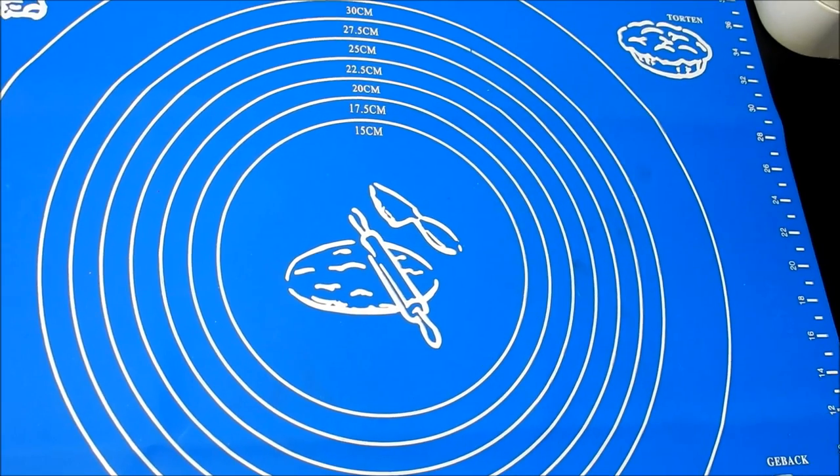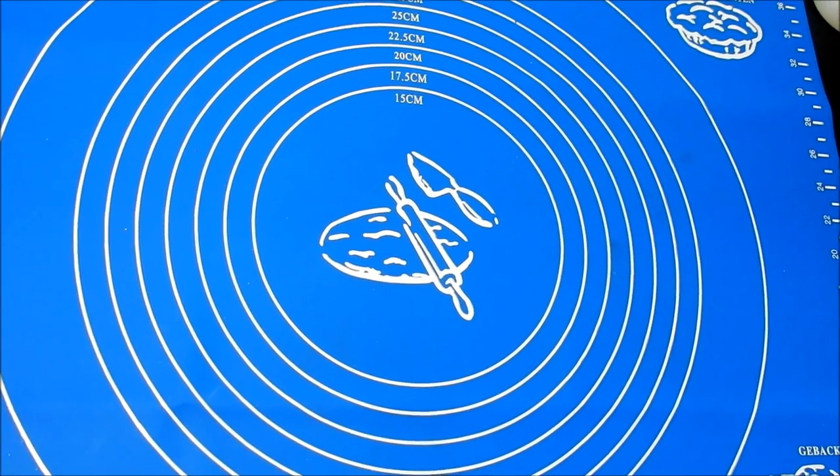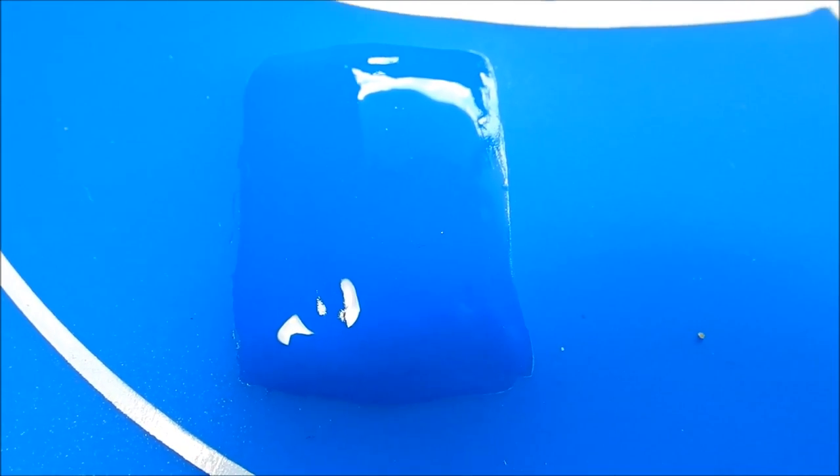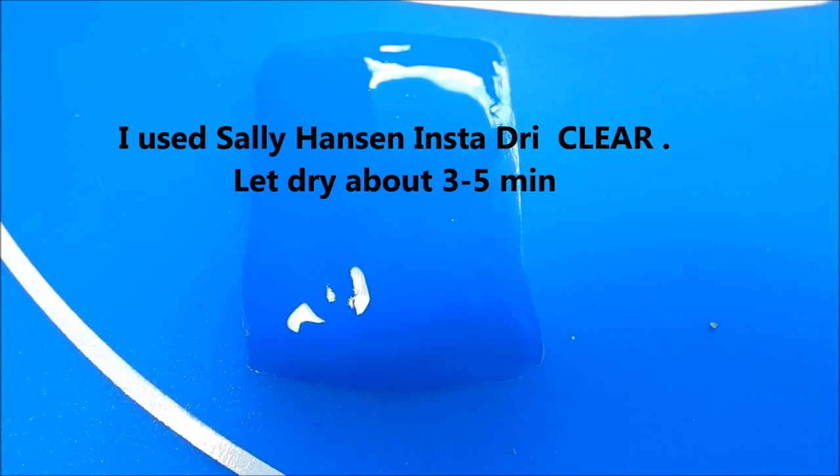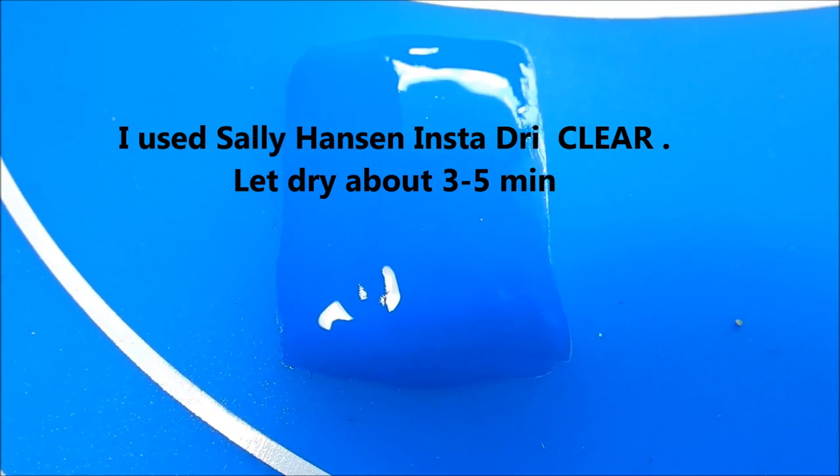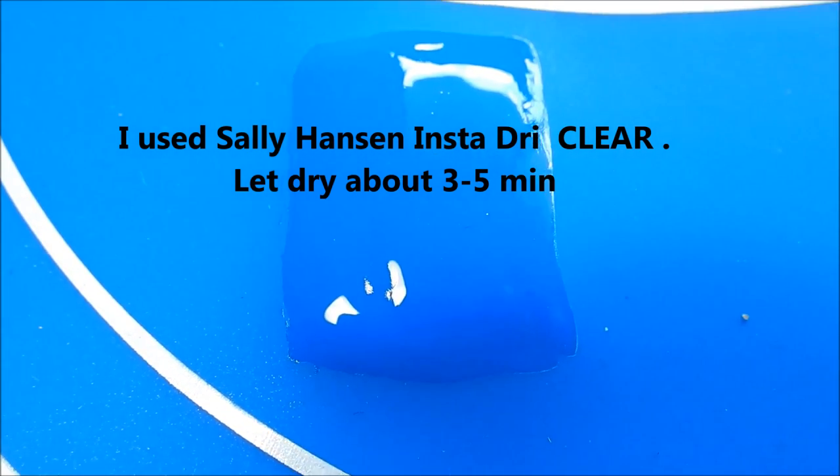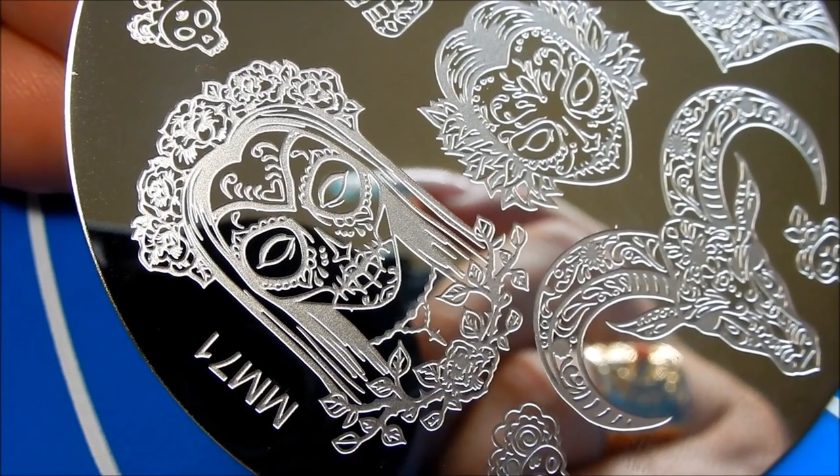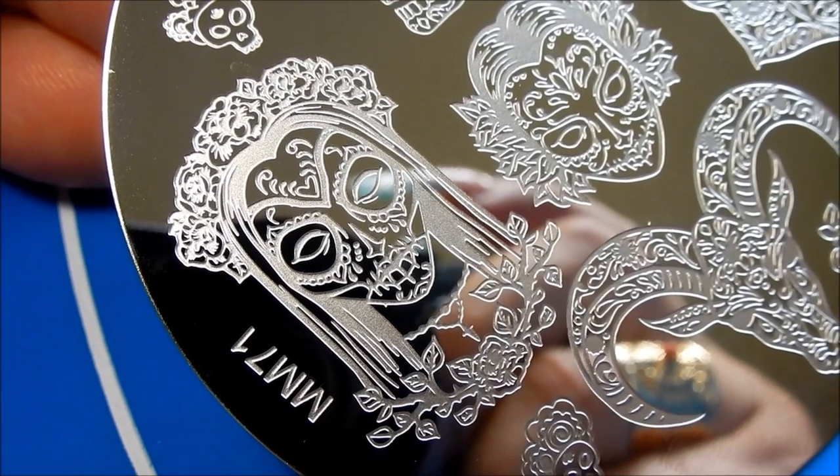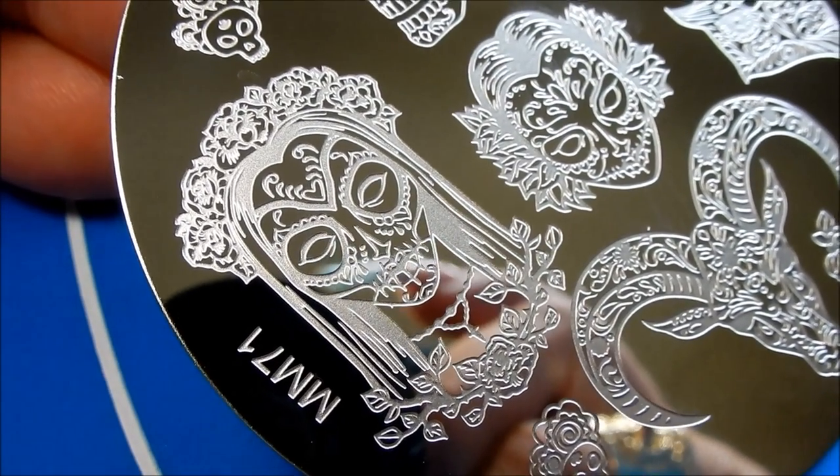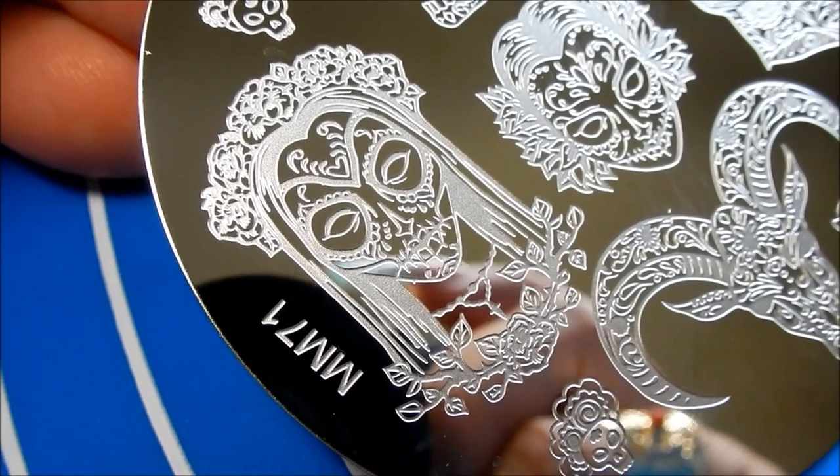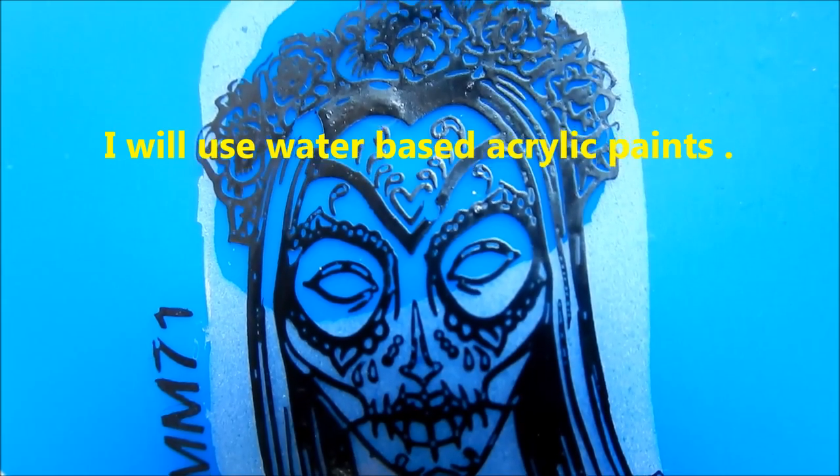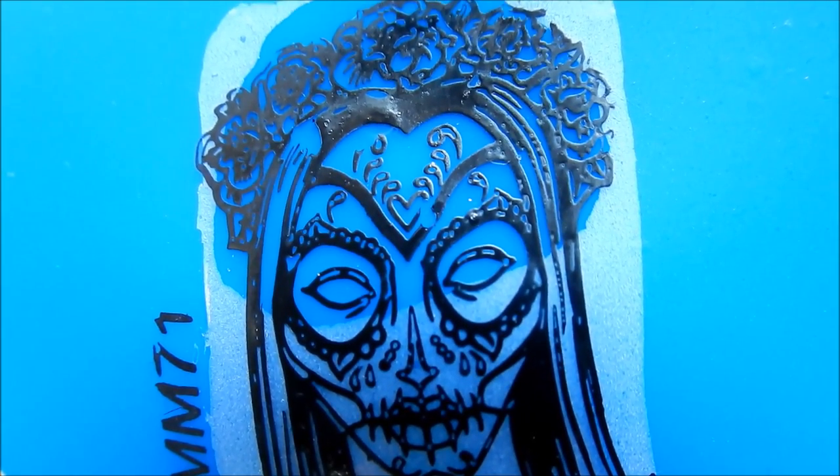Okay, I took a fast drying top coat and I applied it to the mat in a square and I'm going to stamp over it. I'm going to be using this Messy Mansion plate 71 with this sugar skull woman right here. Thanks Jamie for showing me this plate because I really love it. So I'm going to go ahead and color in where I want on this image to have some color.